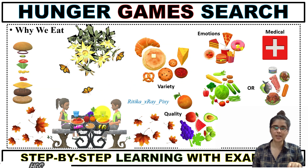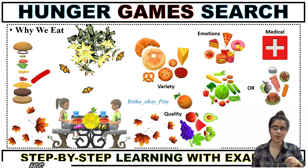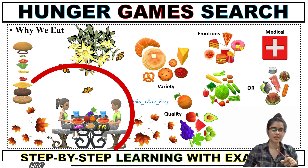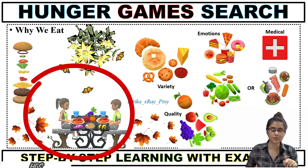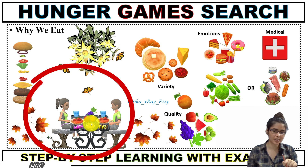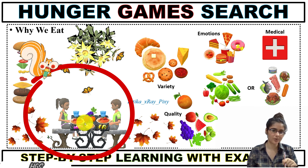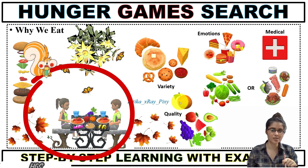First, what is hunger? We all need a balanced diet to stay active throughout the day for movement, growth, and all body functions like breathing, digestion, and others. Besides hunger, there are several other factors by which we choose food — for example, emotions, medical condition, quality, variety, and others. Hunger is a state of discomfort or craving caused by a lack of food, but we do not always eat only when we feel hungry. One factor is personal taste — for example, we eat oranges not because they boost our immune system but because they are juicy and have excellent flavor.